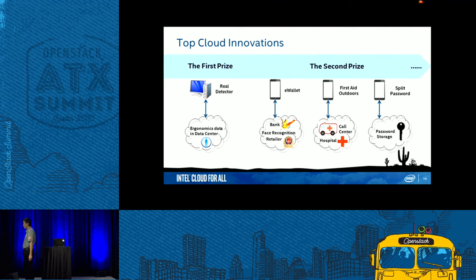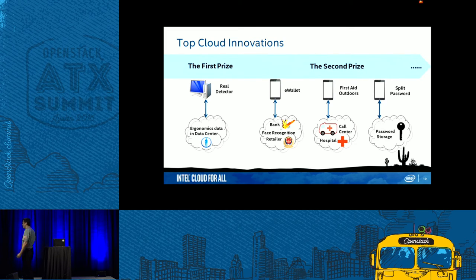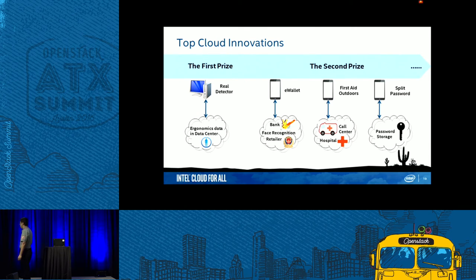The last second-prize application is about security. We have many passwords to remember, and using one password for all accounts is not safe. This smartphone application splits the password into two parts — one hint part stored on the smartphone, and the rest stored on the cloud. When you open the app and need a password, it retrieves the cloud portion, you input the other part, the two combine, and the combined password is sent to the application server for login. This is another cloud usage scenario: using the cloud to store passwords more securely.